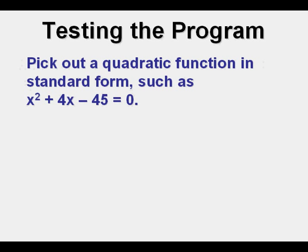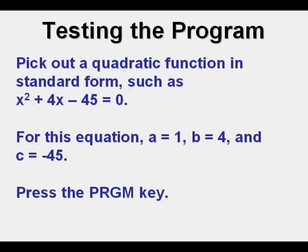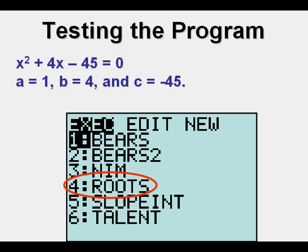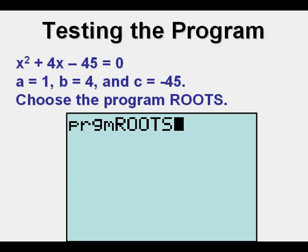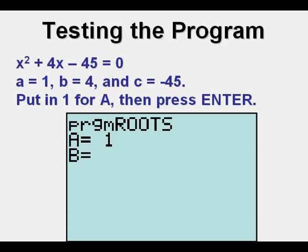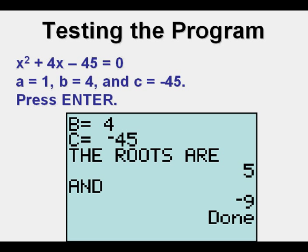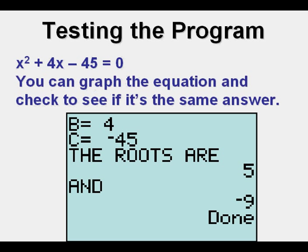Let's use the program. Pick out a quadratic equation in standard form, such as x squared plus 4x minus 45 equals 0. For this equation, A equals 1, B equals 4, and C equals negative 45. Press the program key, choose the Roots program by arrowing down to it and pressing Enter, or press its number, then press Enter. Put in 1 for A, 4 for B, and negative 45 for C, pressing Enter after each. The solutions are 5 and negative 9. You can easily graph the equation to verify the same answer.